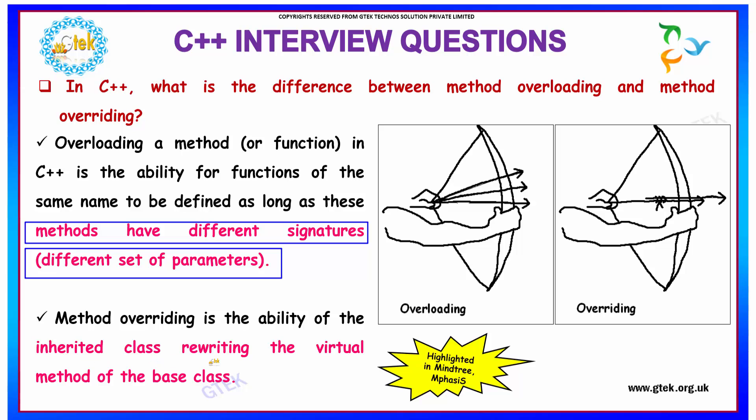Overriding is the ability of inherited class rewriting the virtual methods of the base class. That is, two methods will have the same name and one will be virtual. Then we can define the same method in derived class with different set of functions. So that is known as overriding.